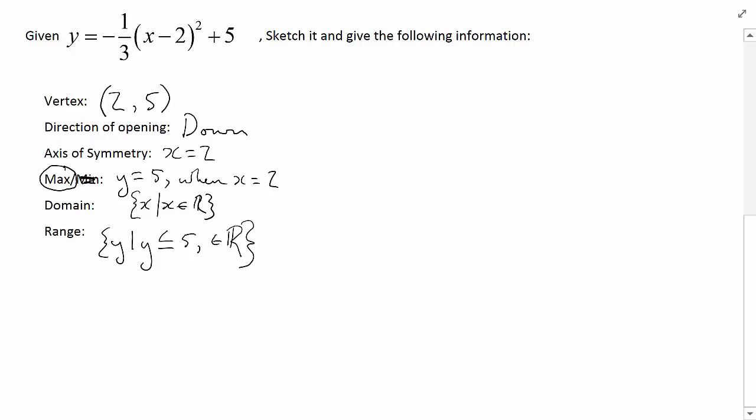And I can do a sketch of this based off of the information that I know. So here's an xy plane, and we know that the vertex is located at 2, 5, so that's somewhere right up here. It's opening downwards. It's going to be wider than a typical x squared because the a value is 1 third. So let's have it opening wide something like this. It looks symmetrical right here at x equals 2. That's it. Easy.